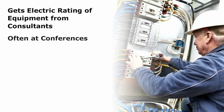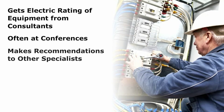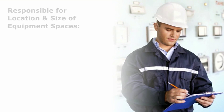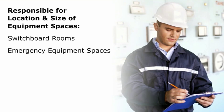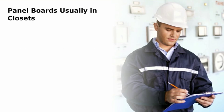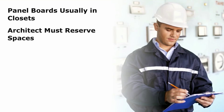This communication often takes place at conferences during which the electrical consultant makes recommendations to the other specialists regarding the comparative costs and characteristics of equipment options. The electrical engineer is responsible for determining the location and estimated size of all required electrical equipment spaces, including switchboard rooms, emergency equipment spaces, and electrical closets. Panel boards are usually located in closets but may be in corridor walls or other locations. The architect must reserve spaces for electrical equipment.